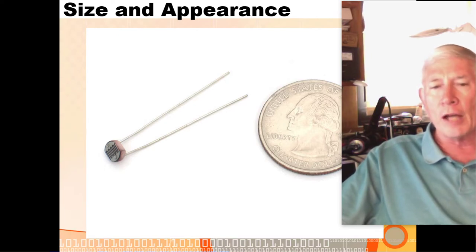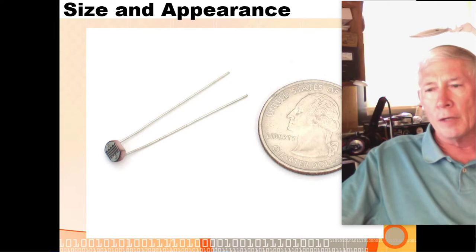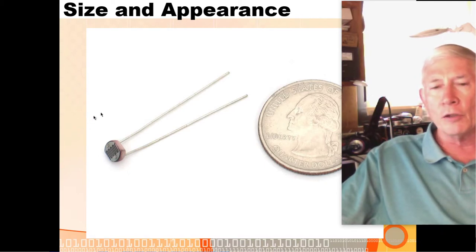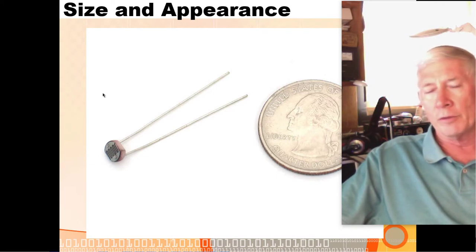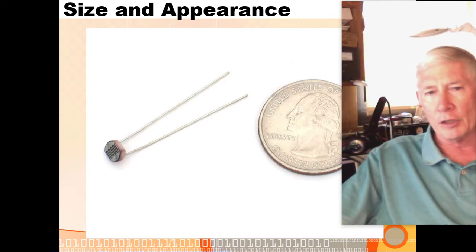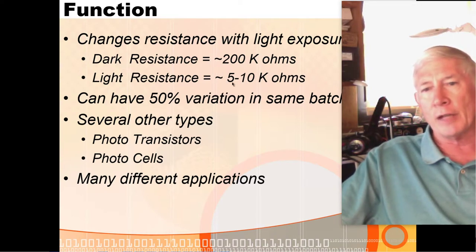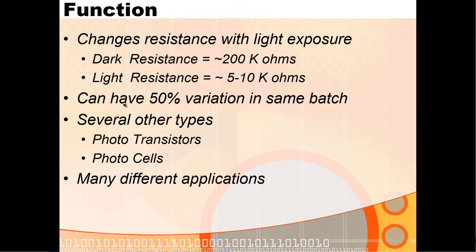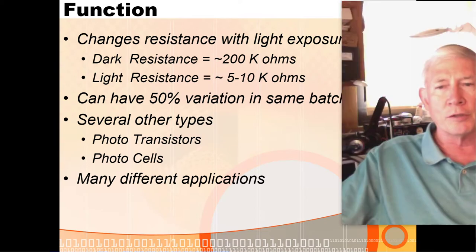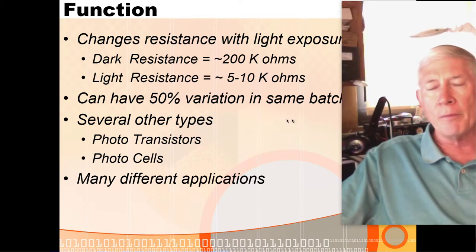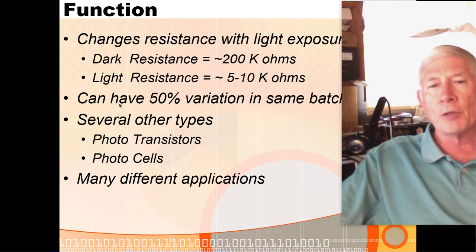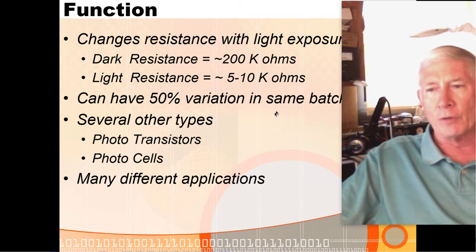When completely dark you'll get a fairly high resistance — maybe around 500 kilohms. Make it really bright and the resistance drops down to 2 to 5k ohms. That's a couple orders of magnitude drop. One interesting feature is that devices can have 50% variation even within the same batch, so you need pretty wide latitude when it comes to thresholds for ambient light measurements.